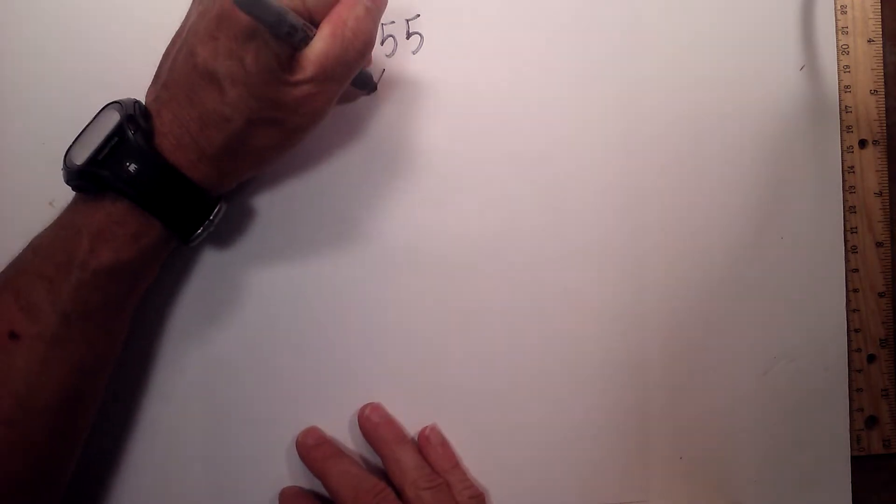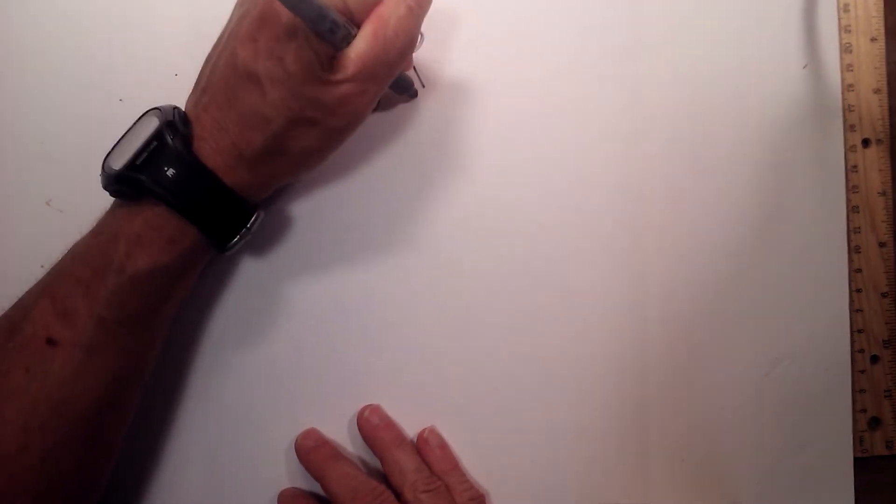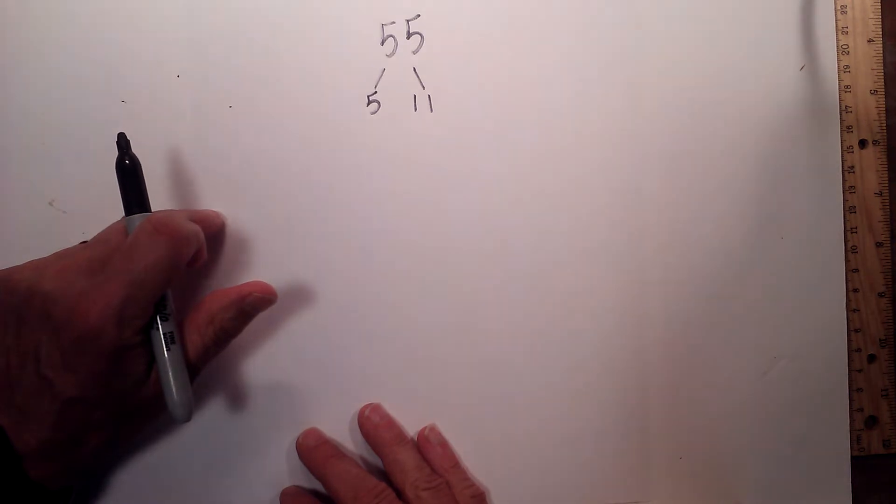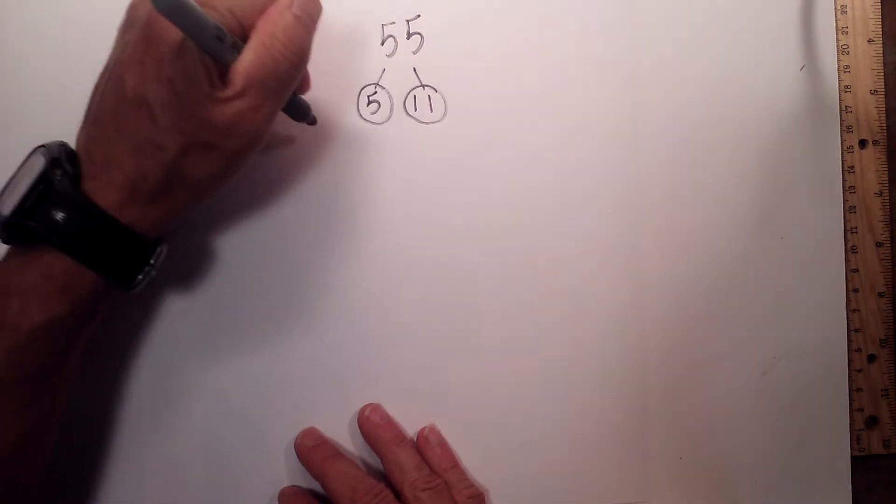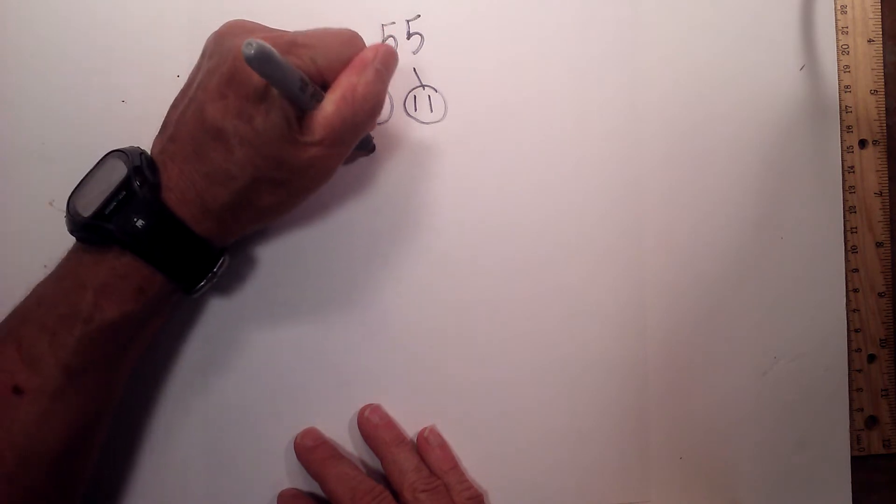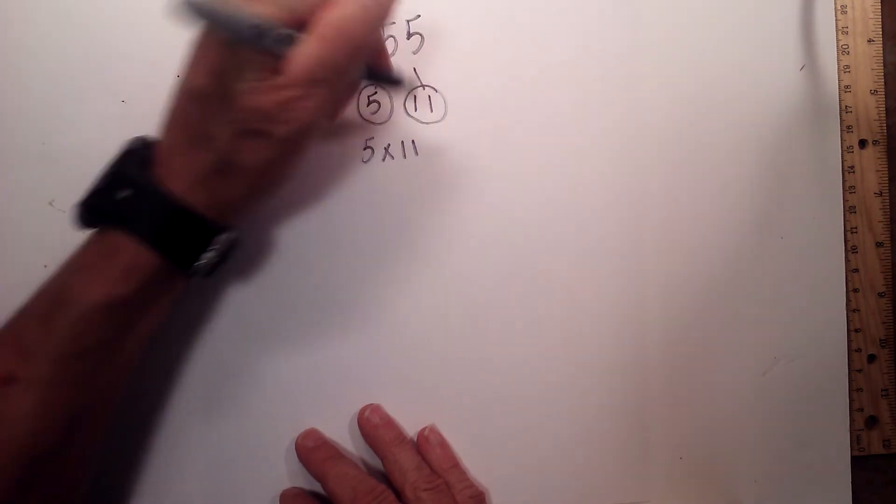This one is rather short. I know 5 times 11 is 55. I will circle both of them because they are both prime. So the prime factorization of 55 is 5 times 11.